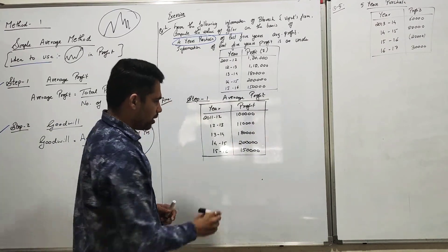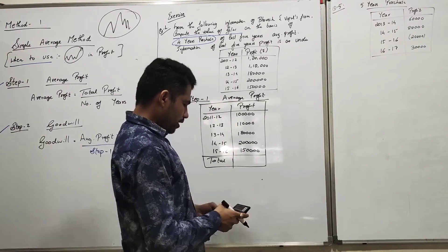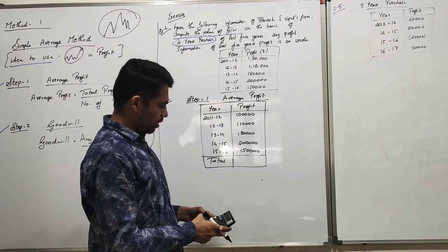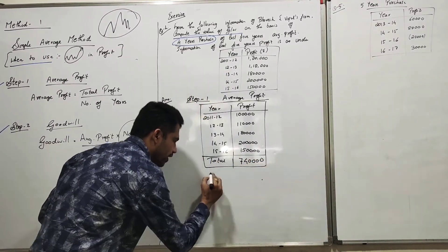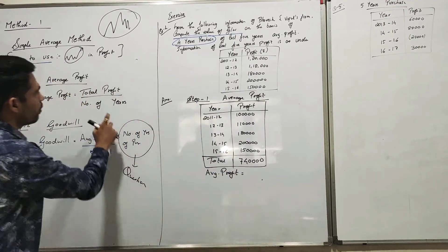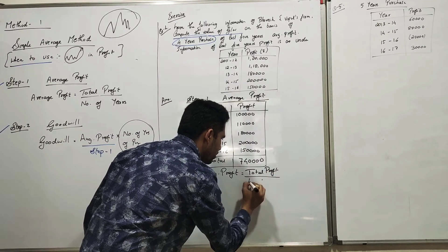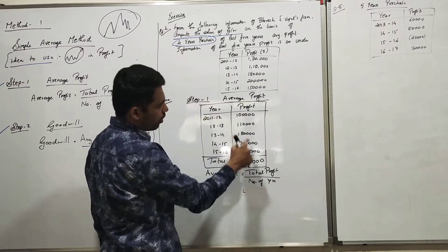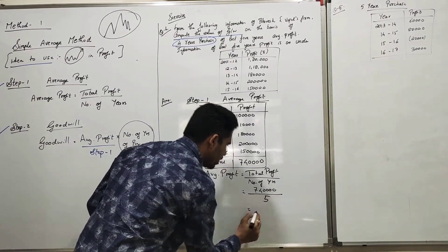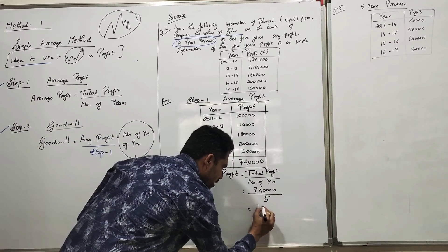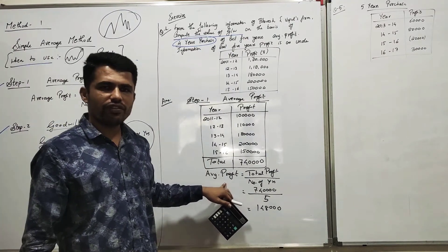After completing the table, find the total profit: one lakh plus one lakh ten thousand plus one lakh eighty thousand plus two lakh plus one lakh fifty thousand equals seven lakh forty thousand. The formula for average profit is Total Profit divided by Number of Years. Seven lakh forty thousand divided by five years gives an average profit of one lakh forty-eight thousand. Step one is complete.